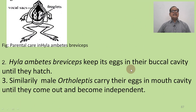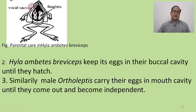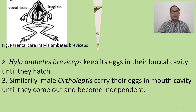Hyla ambatus brebiceps keeps its eggs in the buccal cavity until they hatch. The buccal sac or buccal cavity provides protection from enemies. Similarly, male Ortheolapis carry their eggs in the mouth cavity until the young come out and become independent.